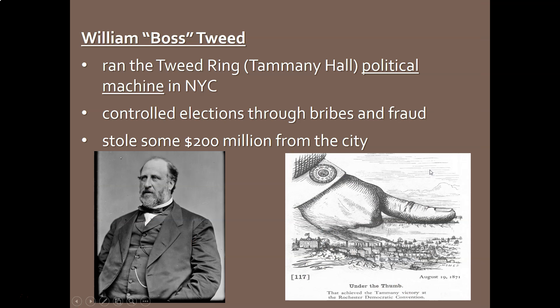There were political machines at really all levels of government. The big cities of America all had a political machine. But the most infamous was the one that ran Democratic politics in New York City, called Tammany Hall or the Tweed Ring — named after the boss, William 'Boss' Tweed. He had an absolute iron grip on politics in New York City. Nobody got elected without his permission. He controlled everything, bribing people, defrauding people, and stealing tons of money from the city coffers. We estimate he stole upwards of $200 million during his career.